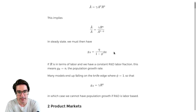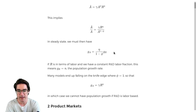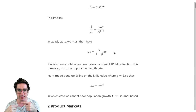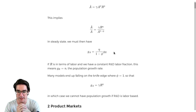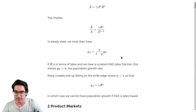Implication number two: in terms of long-run growth, changing the fraction of people devoted to research isn't going to change your long-run growth. It will have some short-run effect, but because research gets harder over time, that gets dissipated into a level effect, and the long-run growth rate remains the same.